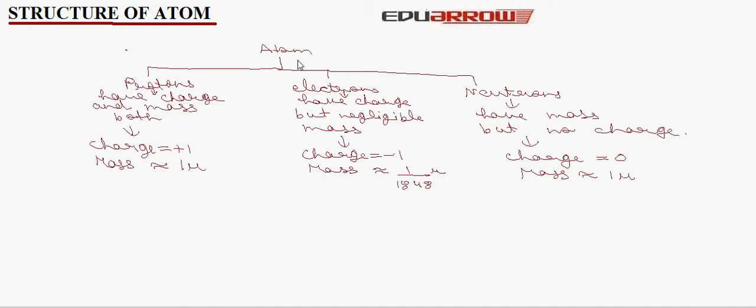Let us first talk about atom. Atom consists of three fundamental particles: the protons, electrons, and neutrons. Protons have charge and mass both. Electrons have charge but negligible mass. Neutrons have mass but no charge.